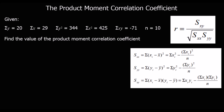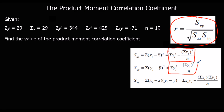Let's look at working out the product moment correlation coefficient. We are given a formula: r is Sxy divided by the square root of Sxx times Syy. We're also given the formulas to work out each of those components — Sxx, Syy, and Sxy — and then we substitute them in to find r, the product moment correlation coefficient.